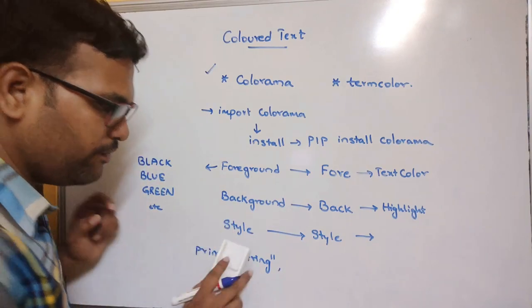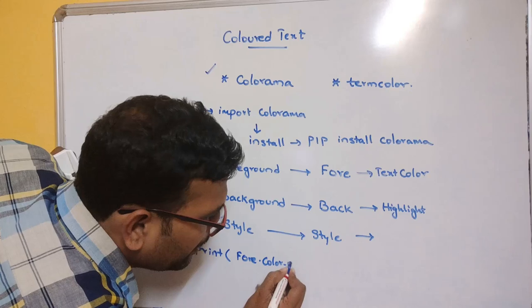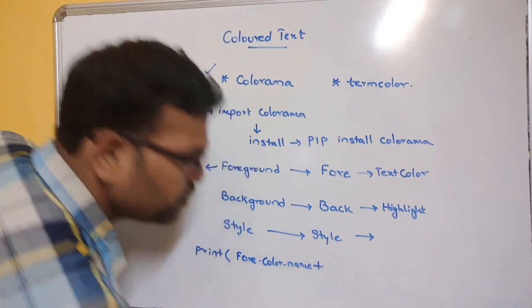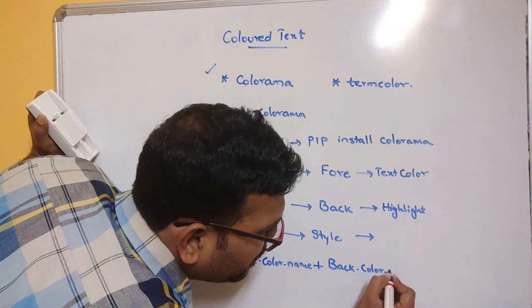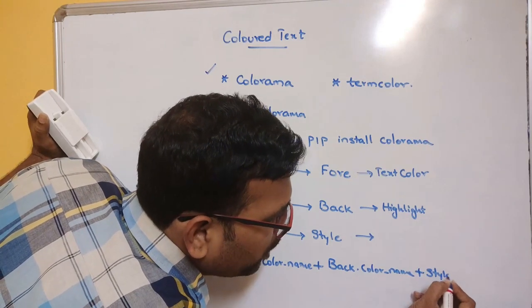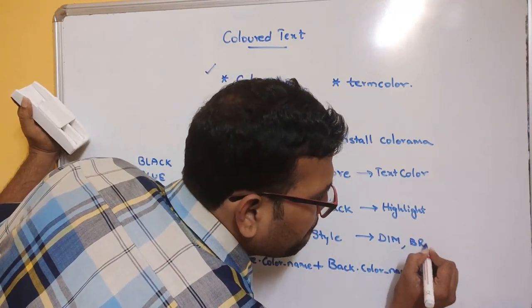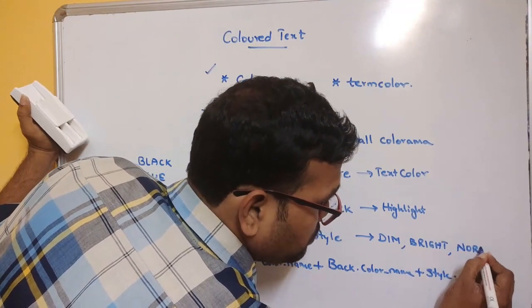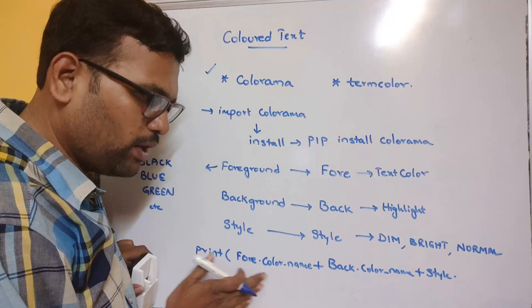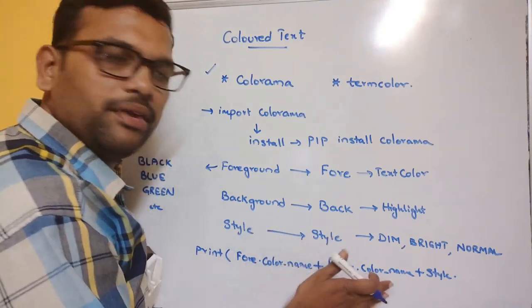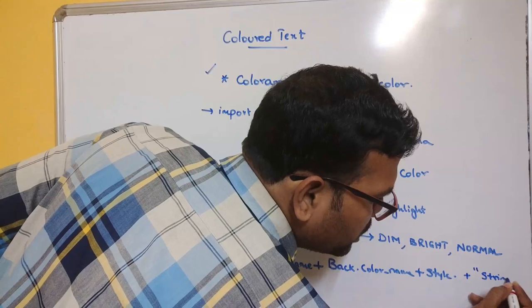For the string, first give the foreground color, background color, and style. The syntax is: Fore.COLOR_NAME (capital letters) plus Back.COLOR_NAME (capital letters) plus Style.STYLE_NAME. Styles are also in capital letters: DIM, BRIGHT, NORMAL. So the full syntax is: foreground color + background color + style + the string you want to display.